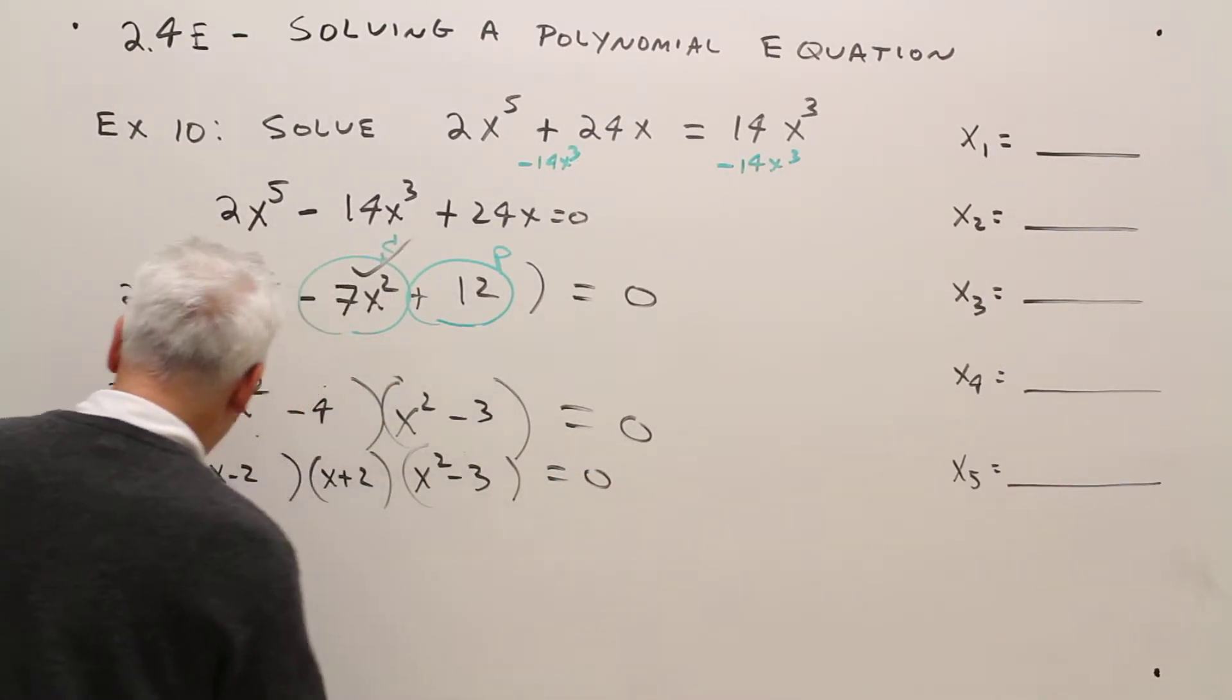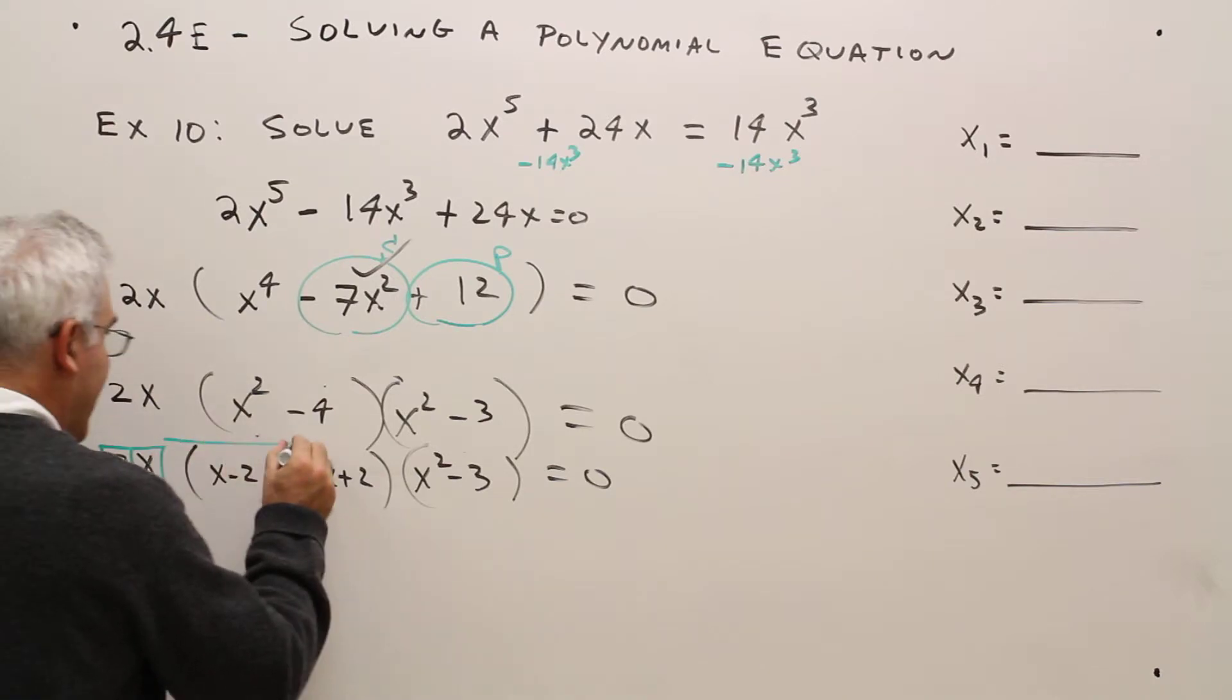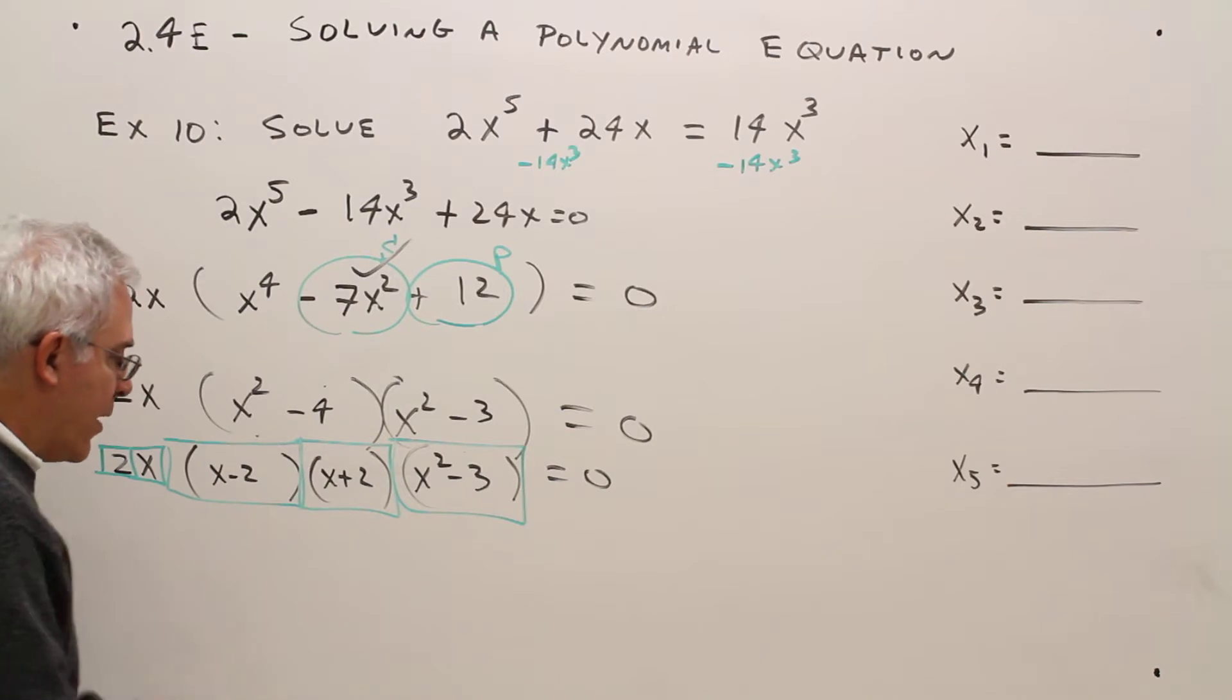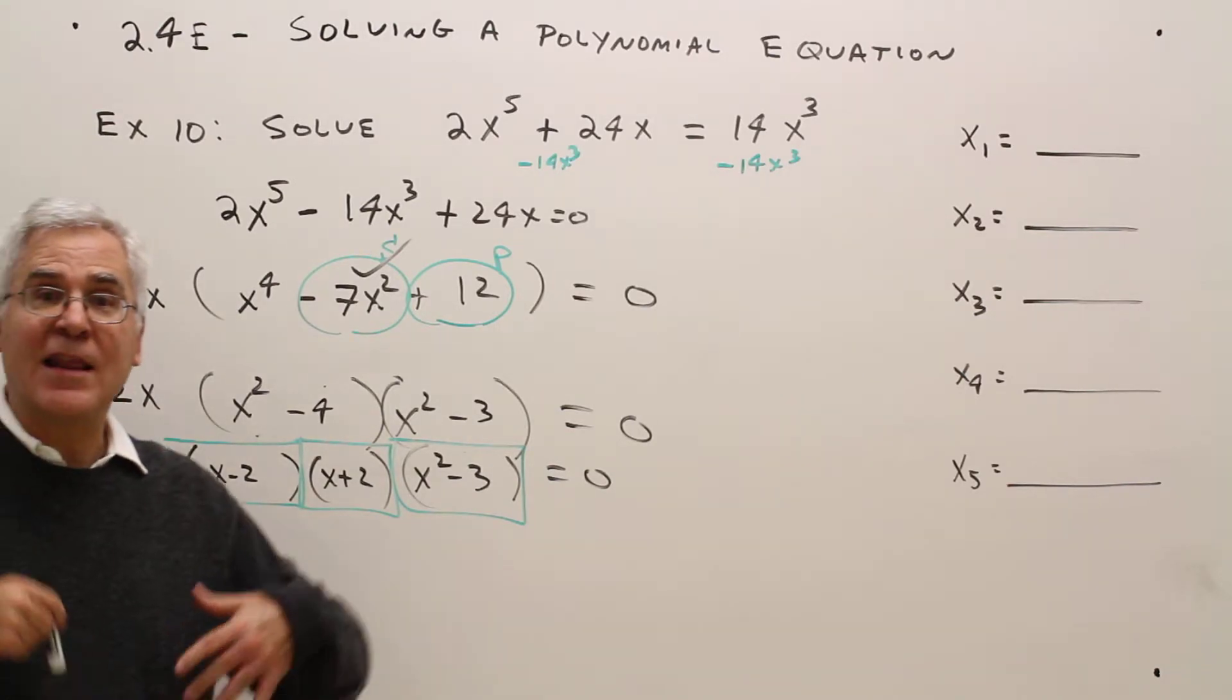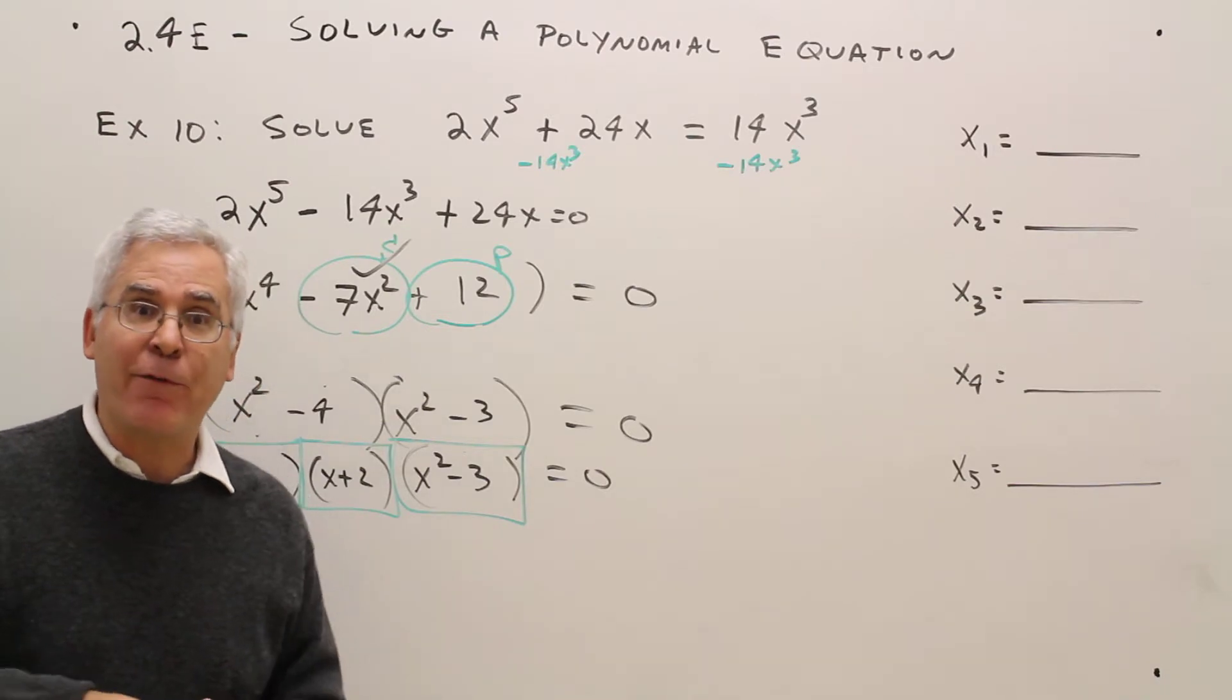All right, then I've got a series of factors. I can even separate the 12 boxes. I've got a 2, I've got an x, I've got that, I've got that, and I've got that. So what you want to do is set each factor chunk equal to zero and solve it for x.